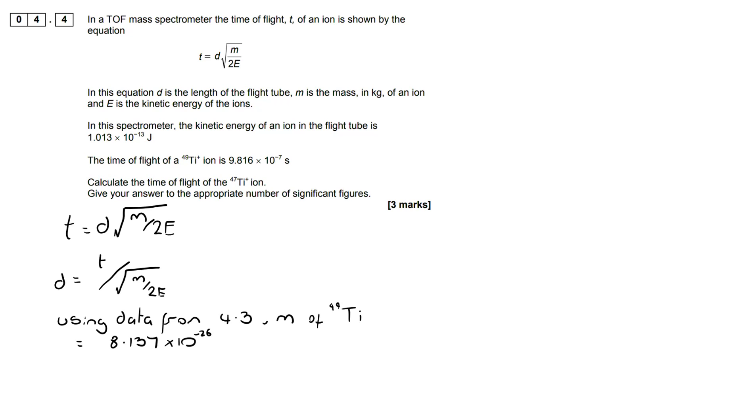I'm actually going to need to use the answer from 4.3. When I worked out my mass of one atom of titanium-49, I got it as 8.137 × 10^-26. I'm going to bring that forward into this expression because we're going to work out the distance using the titanium-49 data.